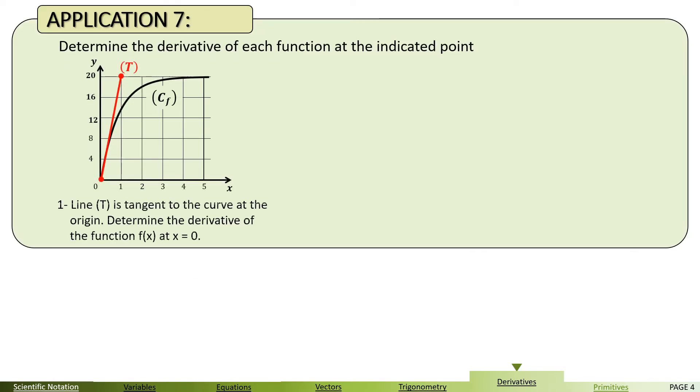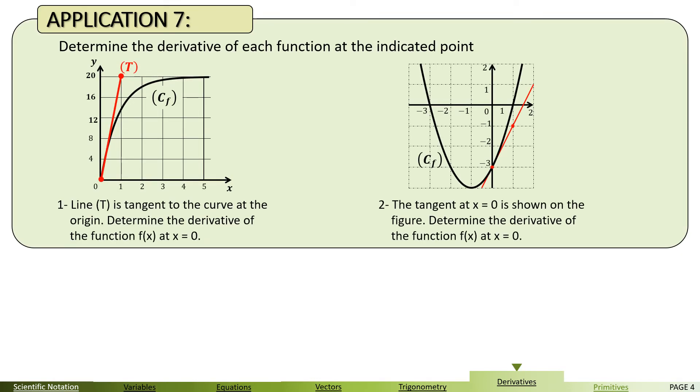Applying what we have seen so far, we will solve application 7, in which we are asked to determine the derivative of each function given the tangent to the curve of that function. In figure 1, you are given line t tangent to the curve at the origin. In the second graph also, the function is c of f or the graph of f of x. The tangent at zero is also drawn in red, and here the tangent passes by two points. It's up to you to try to solve that, and don't forget, always discuss your answers with your instructor.